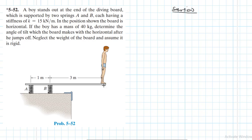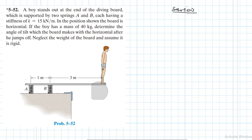We have this boy standing on the diving board and we're assuming it is rigid. That means when one point goes down, the other point comes up — it remains straight. That's the idea behind a rigid body assumption. Of course in reality we know that is not the case, but we are assuming it is rigid.